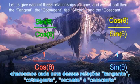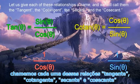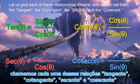Let us give each of these relationships a name, and we will call them the tangent, the cotangent, the secant, and the cosecant.